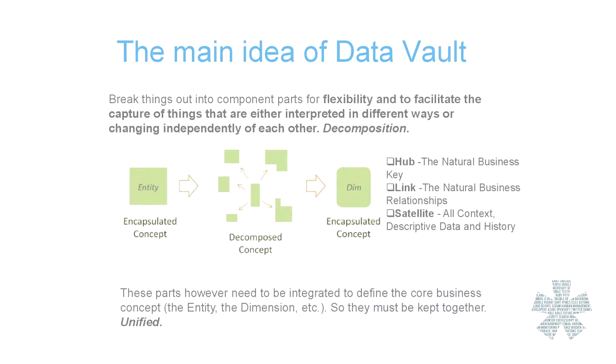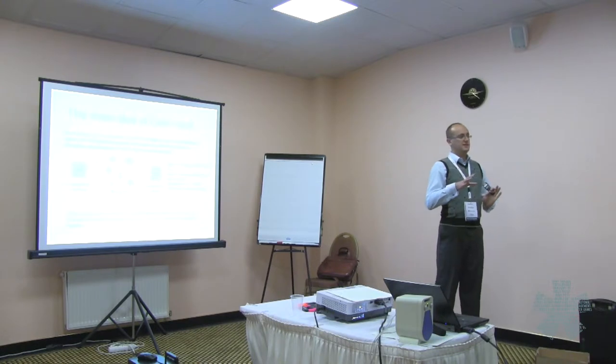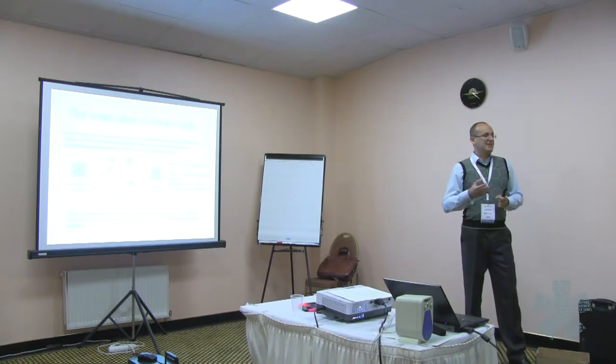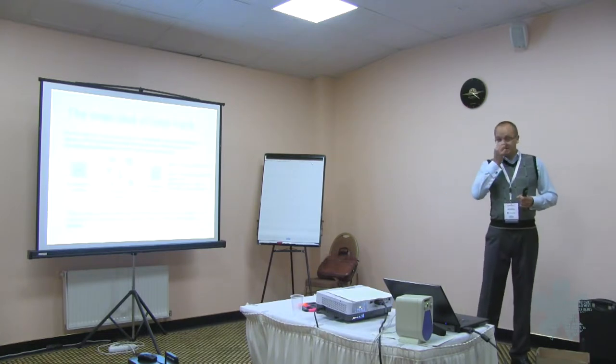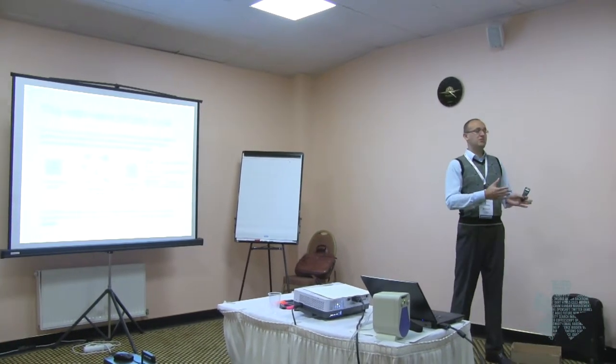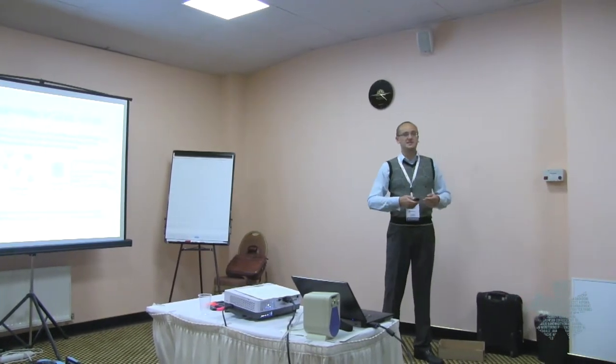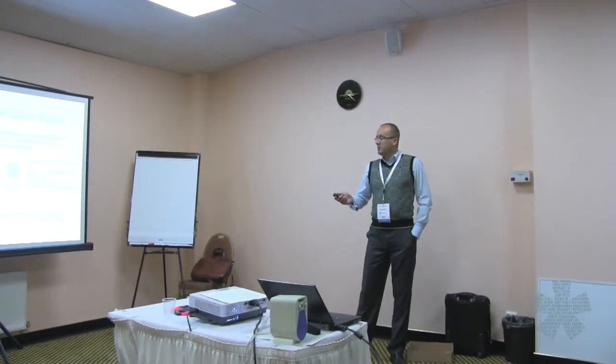What is Data Vault actually? Data Vault is a technique where we take some entities and tables from the sources and split this information into three categories: identification, relations, and description — the context of information. We put it into different data structures. Why? Because the rate of change of this information is different, and it is interpreted differently. If this information is put in one table in the sources, it doesn't mean it belongs to one entity. So we split incoming information into three categories: identification, relationship, and description — but we keep all this information together, unified, because afterwards we will need to construct facts, dimensions, and aggregates.